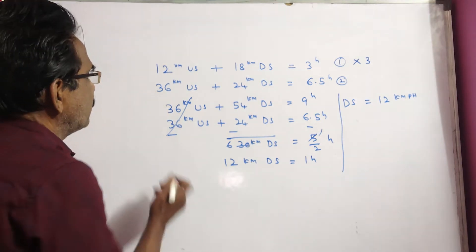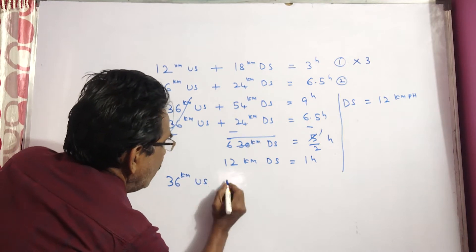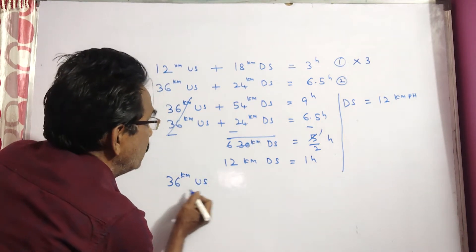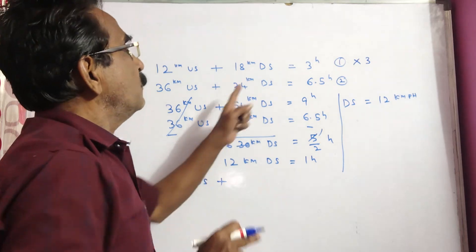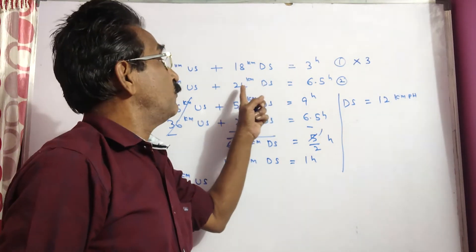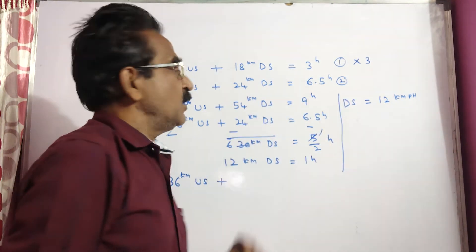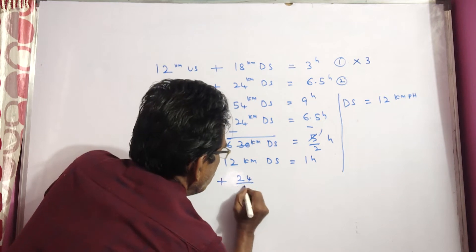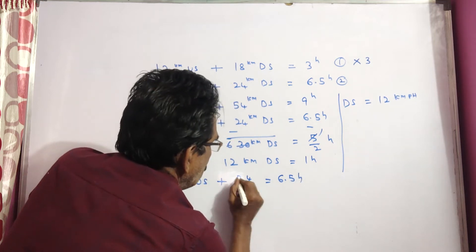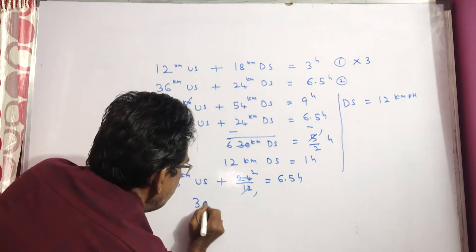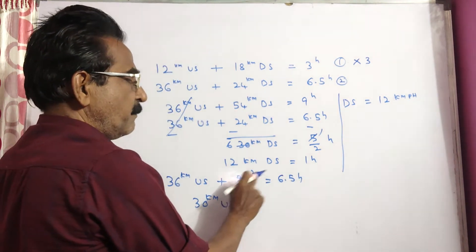In the second equation, look at the second equation friends. The time taken to travel 36 kilometers upstream, plus the time taken to travel 24 kilometers downstream — which equals 24 divided by downstream velocity of 12 kmph — equals the total time of 6.5 hours. So 24 by 12 equals 2. The time taken to travel 36 kilometers upstream equals 6.5 minus 2, which is 4.5 hours.